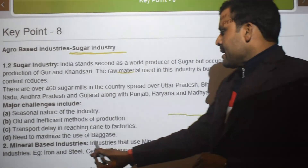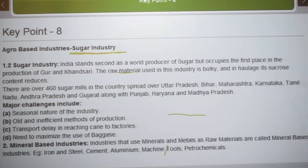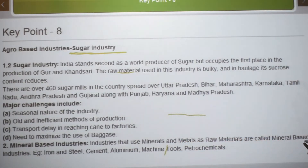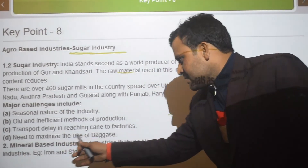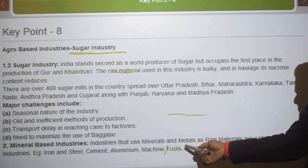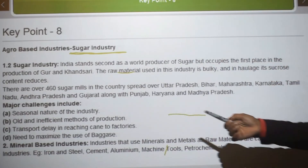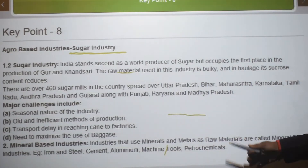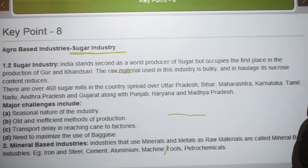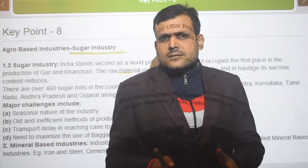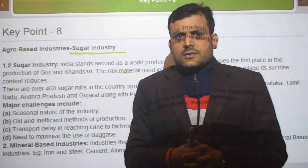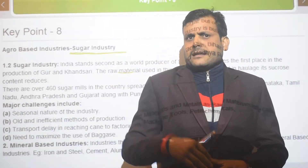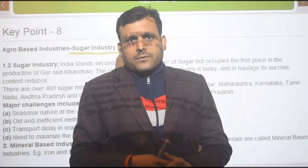Next we have mineral-based industries. Industries that use minerals and metals as raw materials are called mineral-based industries. Examples include iron and steel, cement, aluminium, machine tools, and petrochemicals. So my dear students, I think you understood better. Please make these notes in your notebooks. If you have any queries or problems, discuss them in the group. In the next video we will discuss the remaining parts. Good day, bye-bye.